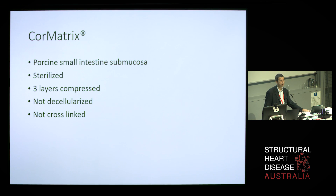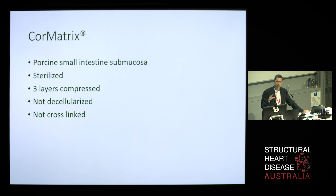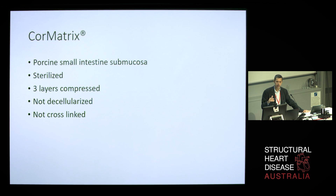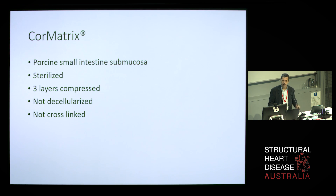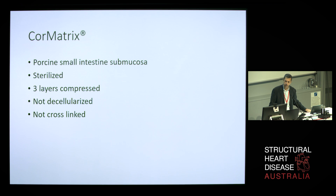The alternative bio-scaffold — and it is probably the one referred to by those who put up the program — is CorMatrix. CorMatrix is an American product that became available about 15 years ago. It is quite interesting in concept. It is porcine small intestinal submucosa. It is not cross-linked, not decellularized, it is sterilized, and there are three layers that are compressed. This compression causes the resistance and relative thickness of the tissue.